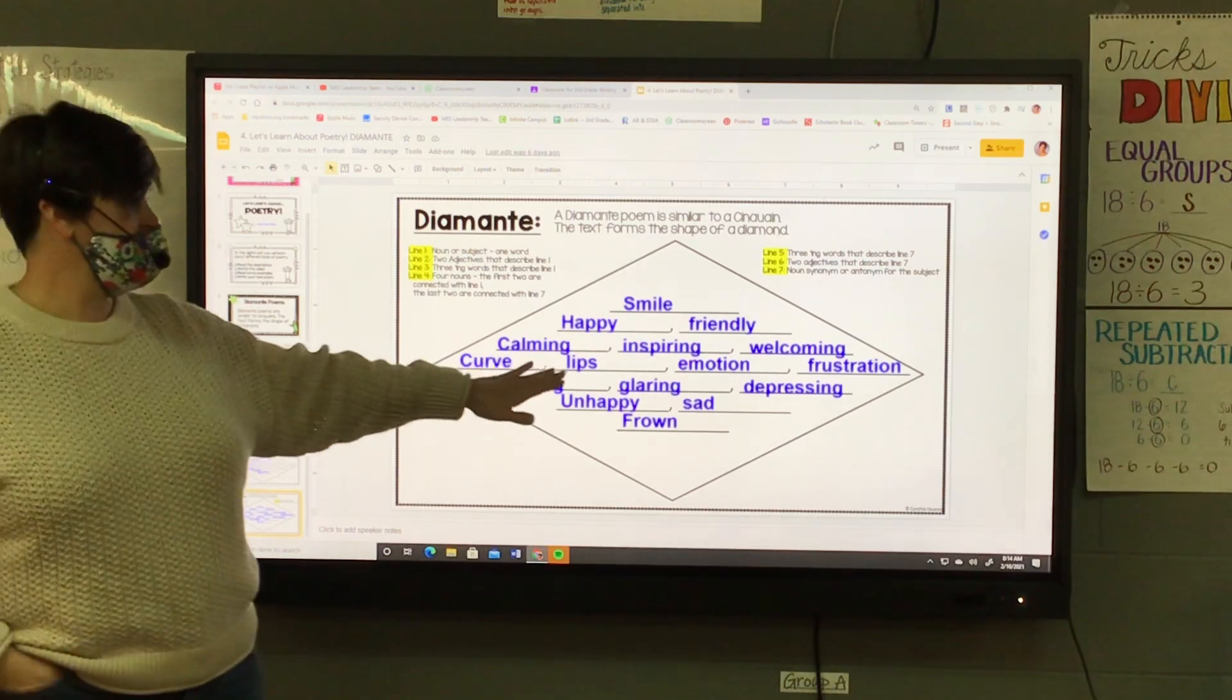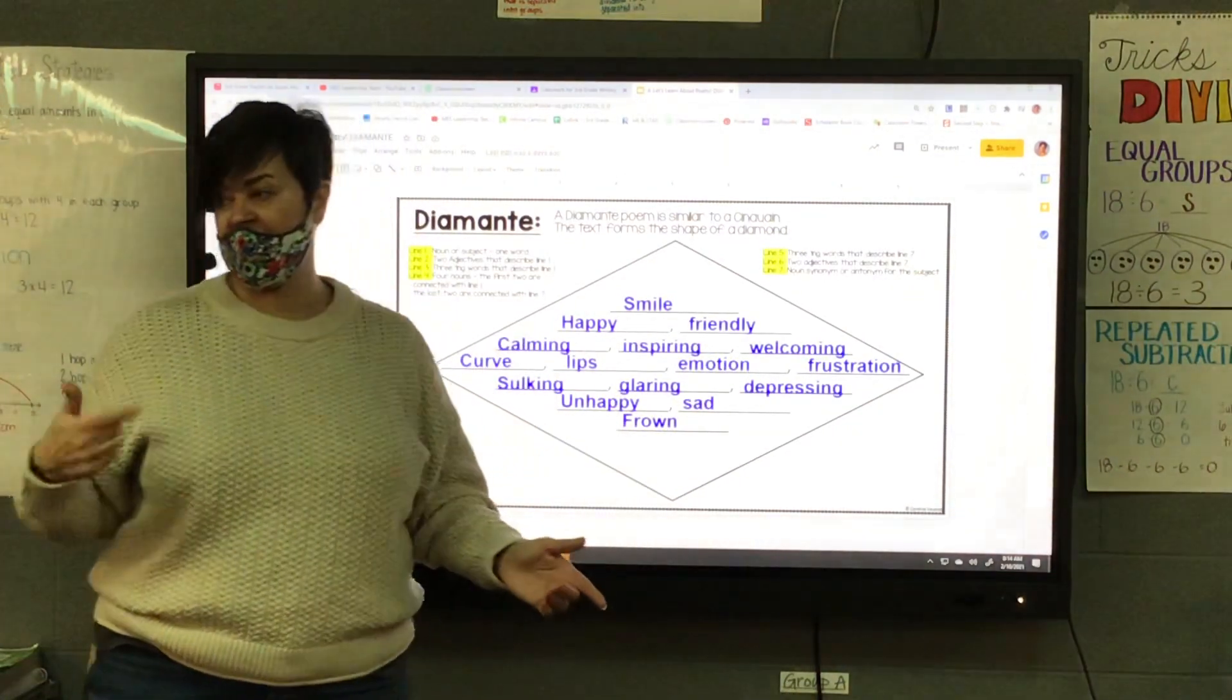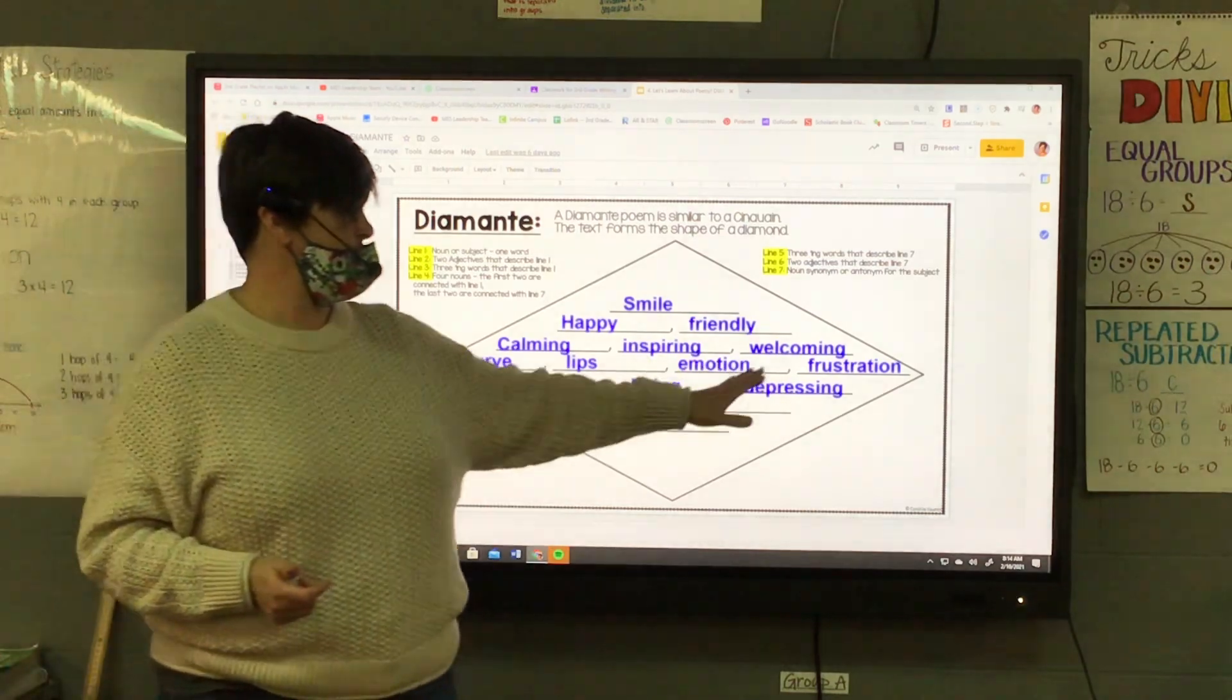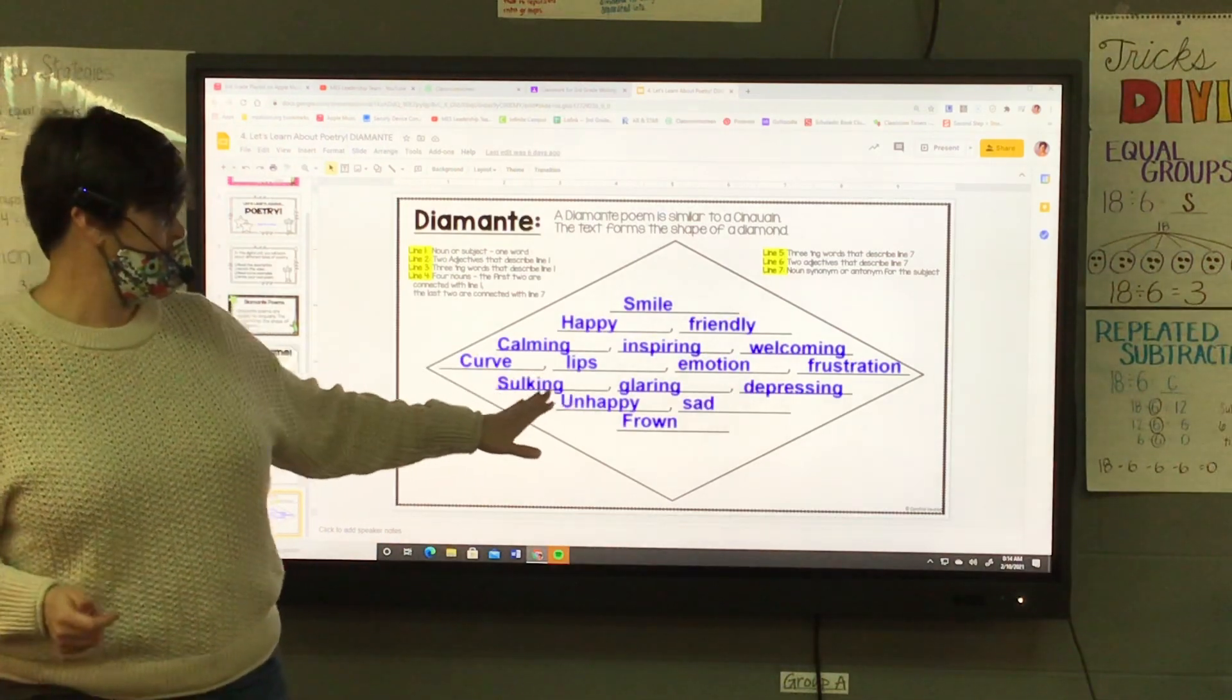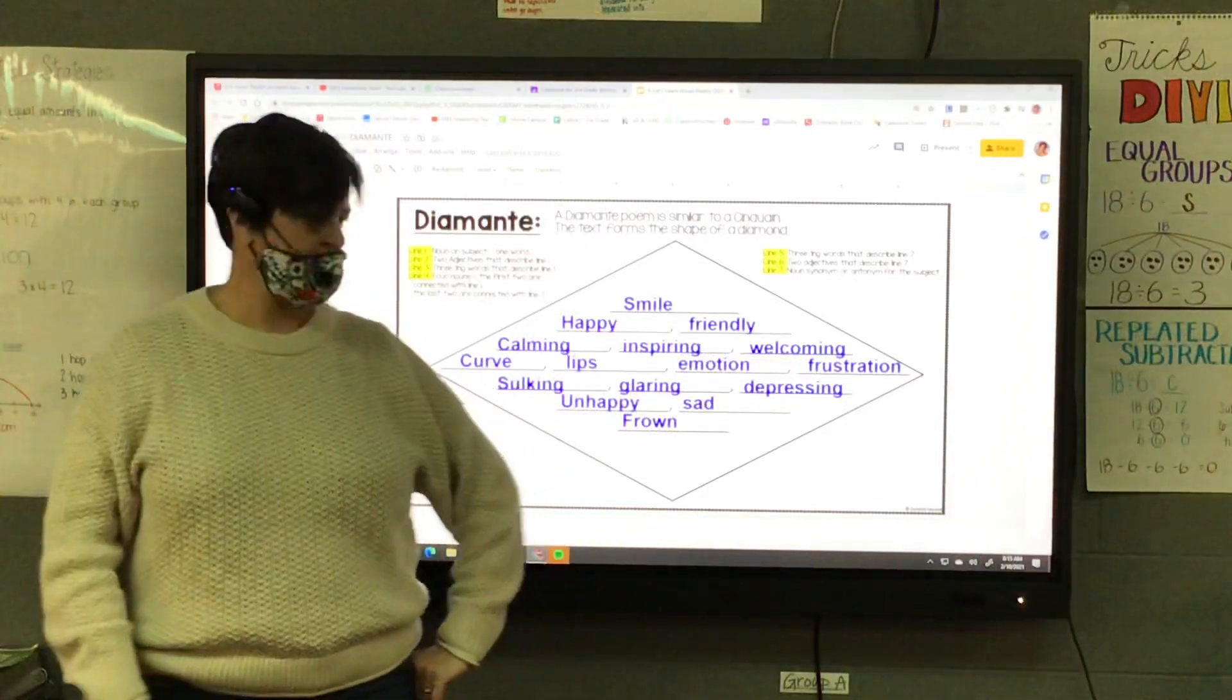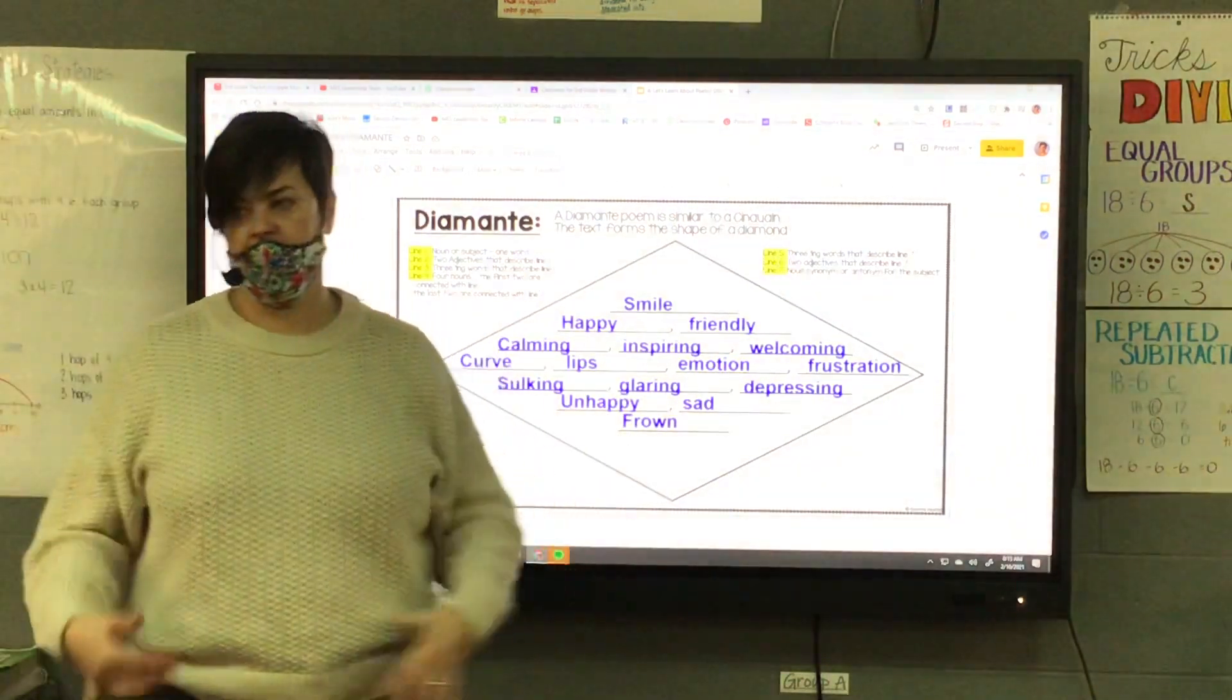Curve, lips, now it's switching, remember, because we did antonyms together. Now we're going to be talking about frown, emotion, frustration, the verbs, sulking, glaring, depressing, the adjectives about a frown, unhappy, sad, and then frown.